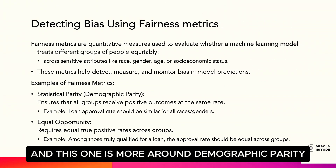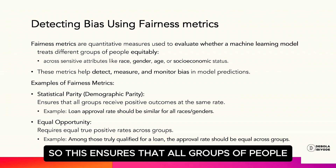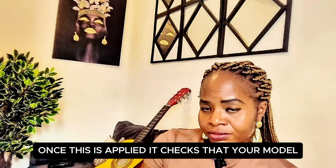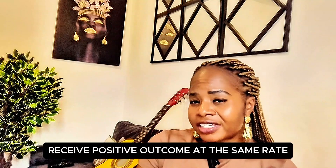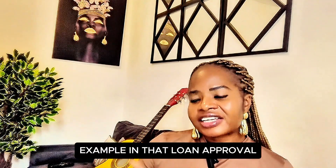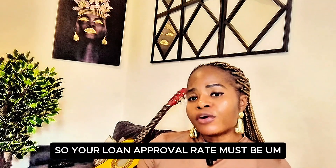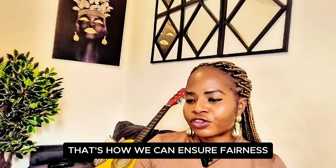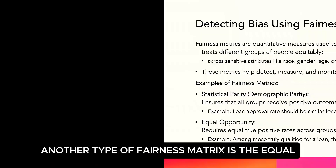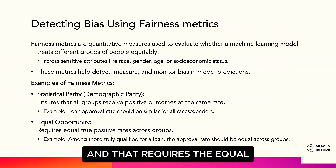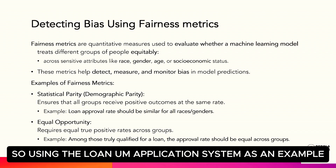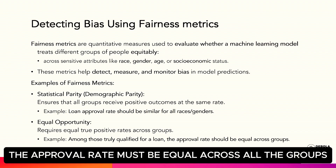Fairness metrics evaluate the system to ensure it treats different groups equitably, and also help detect, measure, and monitor bias in the model's predictions. Starting with statistical parity — also called demographic parity — this ensures all groups receive positive outcomes at the same rate. In the loan approval example, the approval rate must be similar across all race, gender, age, and socioeconomic groups. Another type is equal opportunity, which requires equal true positive rates across groups — among those qualified for loans, the approval rate must be equal.